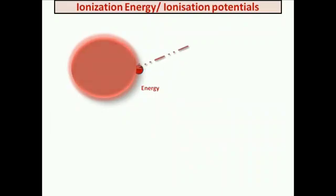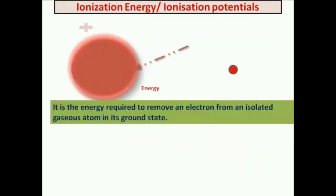The next periodic property is Ionization Potential, also called Ionization Energy. Ionization energy is the energy required to remove an electron from an isolated gaseous atom in its ground state.